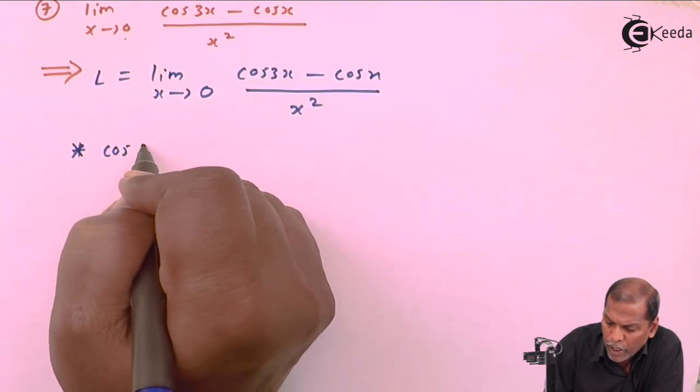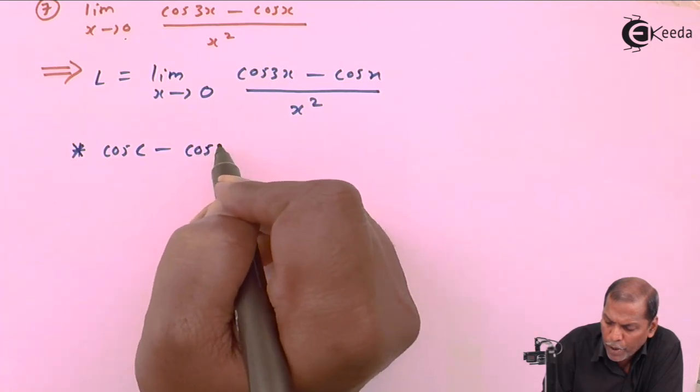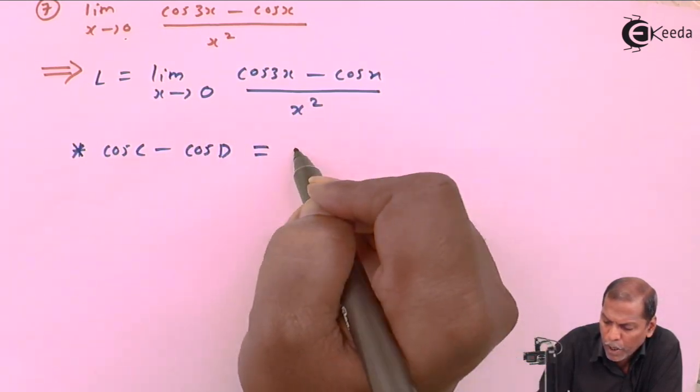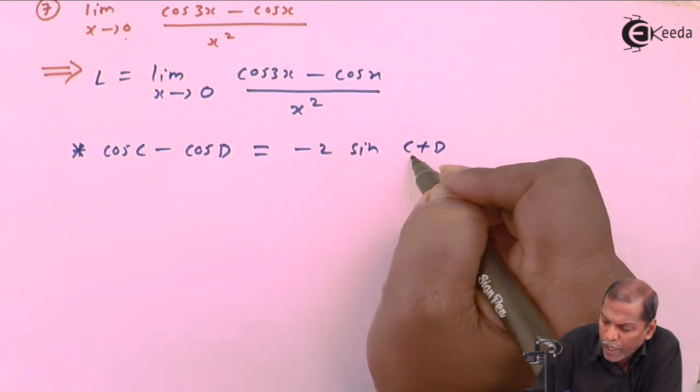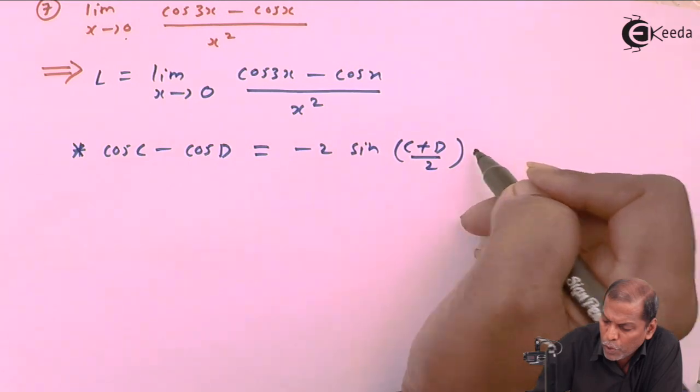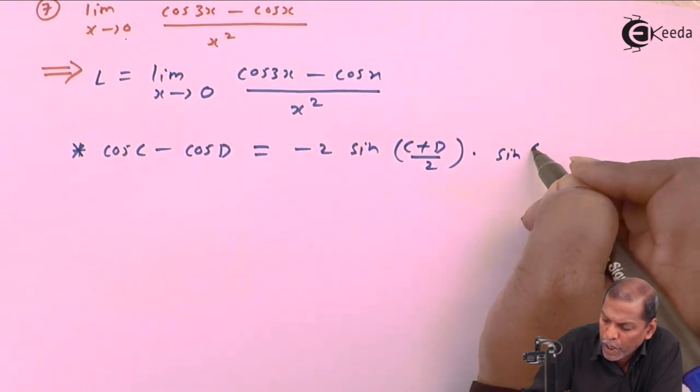trigonometric formula that cos C minus cos D is equal to minus 2 sine in brackets C plus D upon 2, into again sine